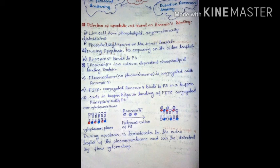Annexin-5 binds to phosphatidylserine when it is flipped out to the outer leaflet of the plasma membrane. Annexin-5 is a calcium-dependent phospholipid-binding protein; it needs calcium ions for its binding to phosphatidylserine.